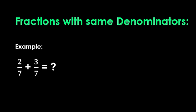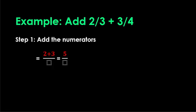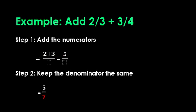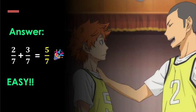2 over 7 plus 3 over 7. Step 1, add the numerators. 2 plus 3 is 5. Step 2, keep the denominator the same, which is 7. Final answer, 2 over 7 plus 3 over 7 equals 5 over 7.